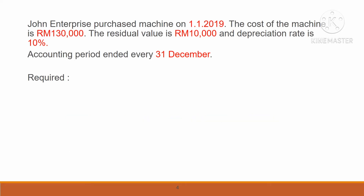Now we look at the first example. Joint Enterprise purchased a machine on 1st January 2019. The cost of the machine is RM130,000, the residual value is RM10,000, and the depreciation rate is 10%. The accounting period ends every 31st December.